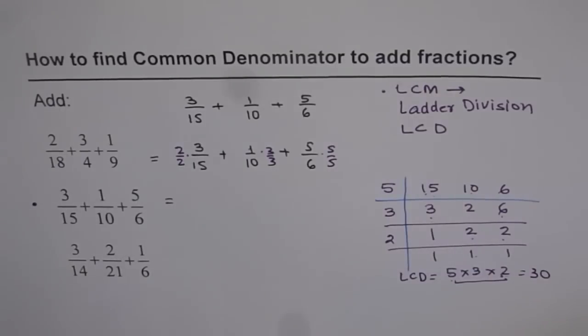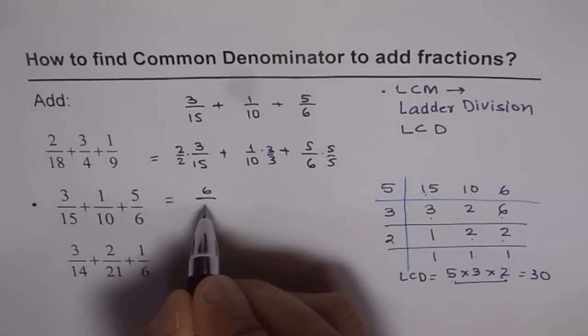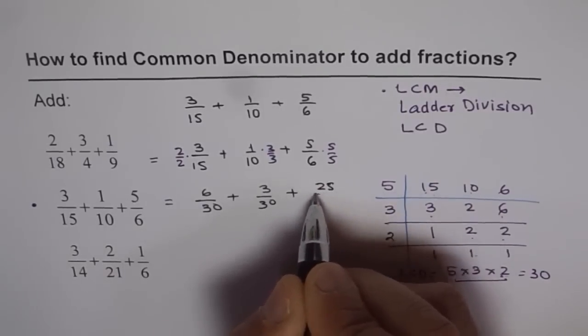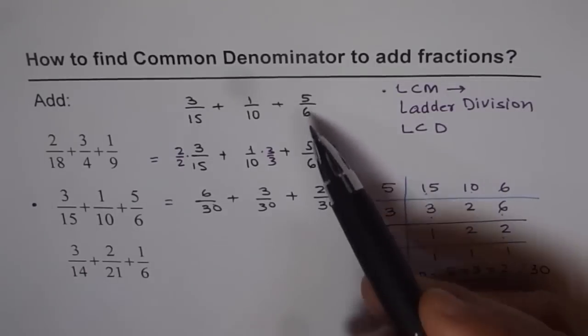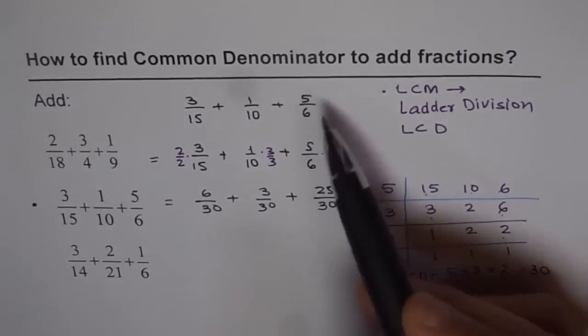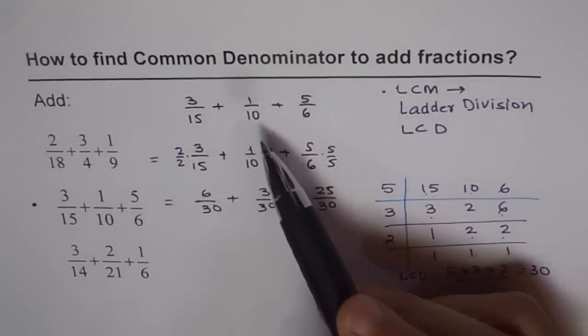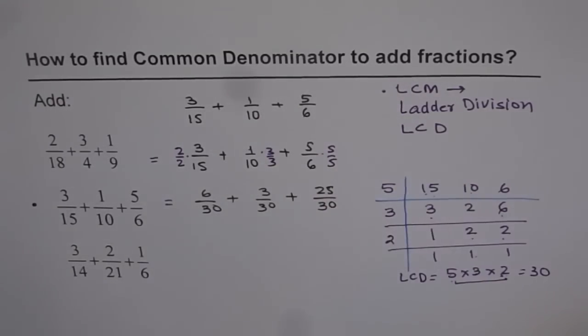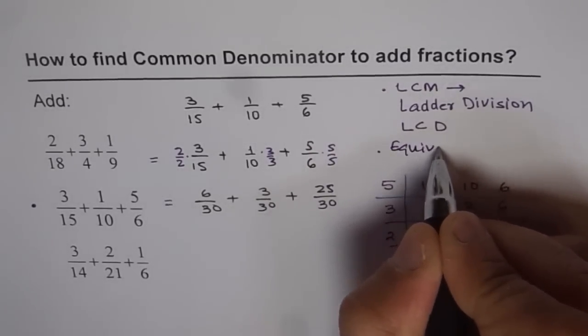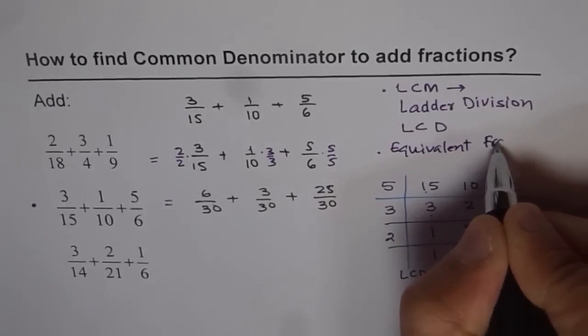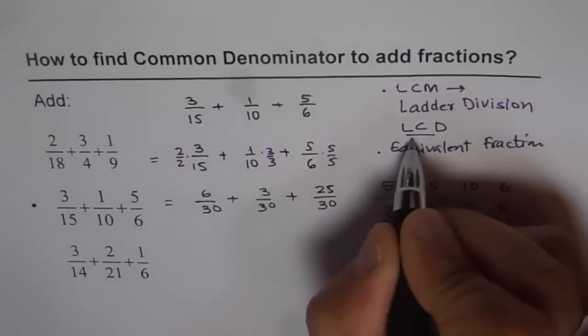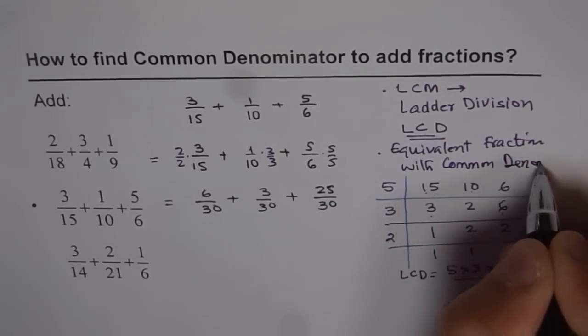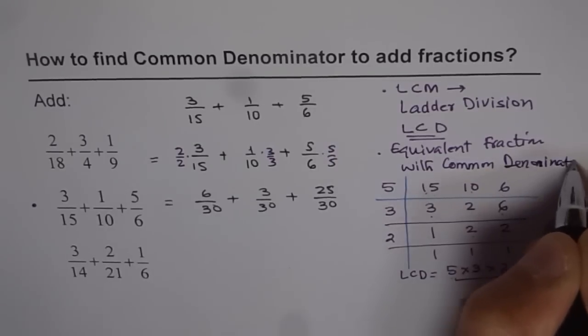Now we can write this as 2 times 3 is 6 over 30 plus 3 over 30 plus 25 over 30. You will know 25 over 30 is the same as 5 over 6. If you divide both by 5, you get back 5 over 6. 1 over 10 is the same as 3 over 30. So they are equivalent. So we come down to fractions which are equivalent fractions. So now what we get is equivalent fractions. But what is important about these fractions? They have common denominator with common denominator.